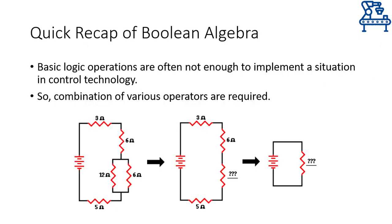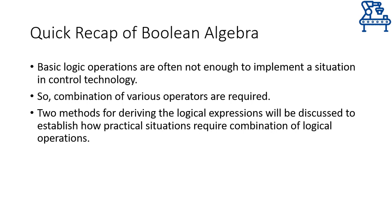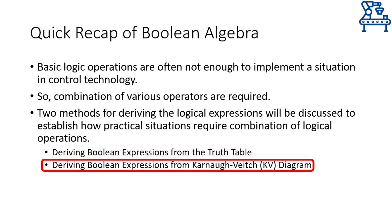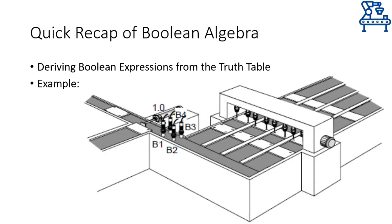Real situations contain a large number of inputs that are responsible for changing the state of a certain output. Therefore, implementing a Boolean equation through pneumatic, electrical or electronic circuit requires that we first simplify things and then implement the simplified version. We need a Boolean expression that can be translated to a circuit by using basic logical functions. So there are two different ways I am going to talk about for deriving the Boolean expression. The first one is through the use of a truth table and the second one is through Karnaugh maps, or K-maps. Let's try to understand the method through an industrial example.